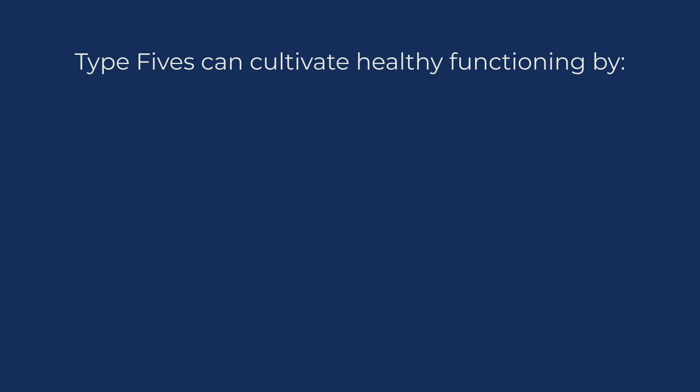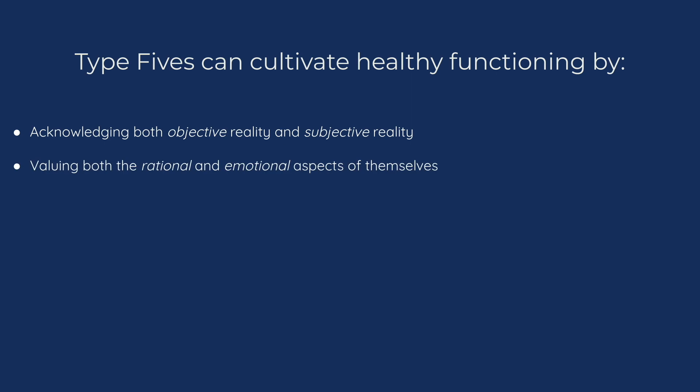Broadly speaking, Type 5s can cultivate healthy functioning by acknowledging both objective reality and subjective reality, by valuing both the rational and emotional aspects of themselves, and by spending time both alone and with others.